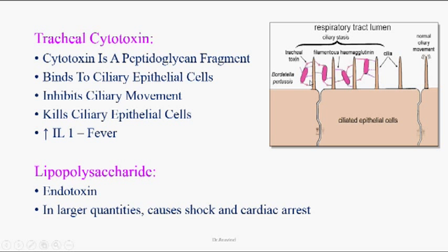Tracheal cytotoxins also stimulate T-cells and phagocytes to secrete more interleukin-1 cytokines, leading to fever and anorexia. These organisms also have lipopolysaccharides (LPS), which are endotoxins. The organism can secrete large quantities of this endotoxin, leading to shock and cardiac arrest.